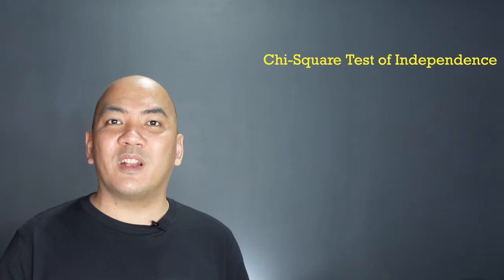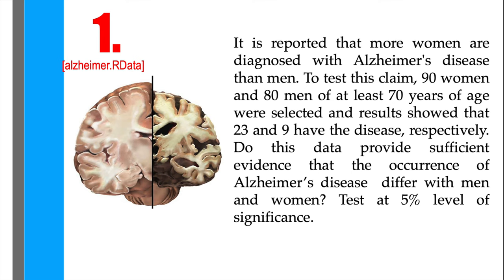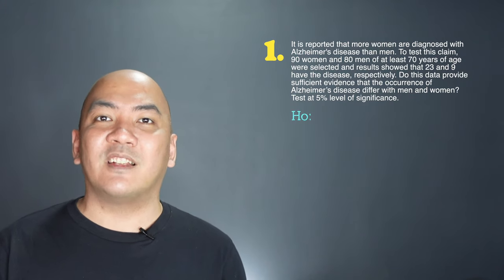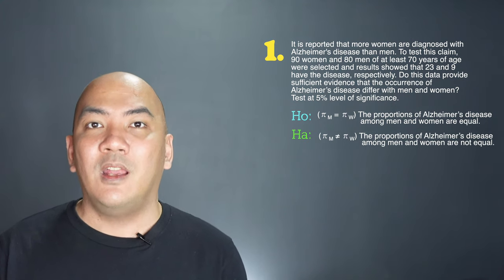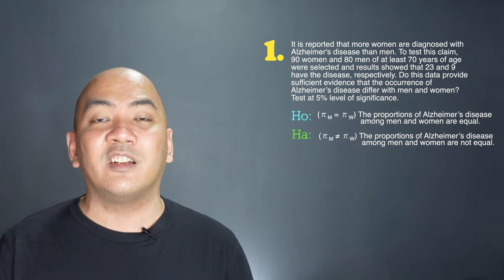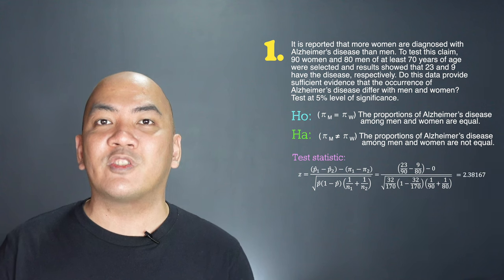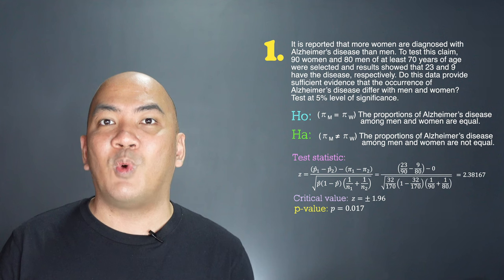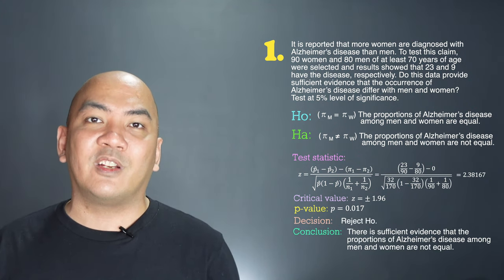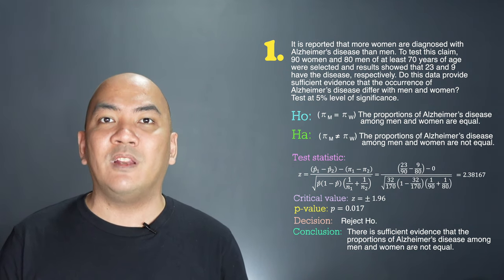Let's revisit the Alzheimer's disease example from statistical inference involving proportions. It is reported that more women are diagnosed with Alzheimer's disease than men. To test this claim, 90 women and 80 men of at least 70 years of age were selected, and results show that 23 and 9 have the disease respectively. Using a Z-test statistic of 2.38167 with a p-value of 0.017, we rejected the null hypothesis and concluded that the proportions of men and women with Alzheimer's disease are not equal.